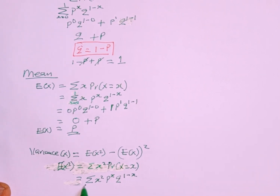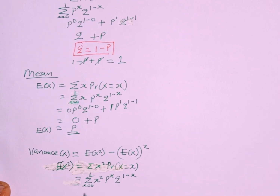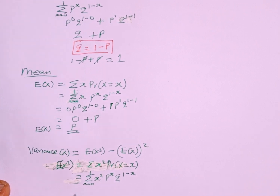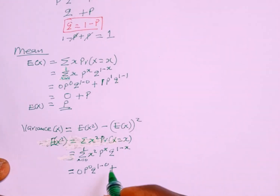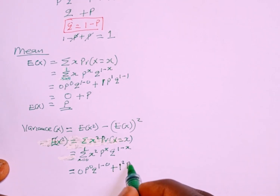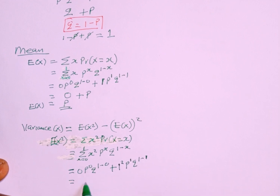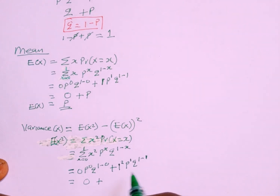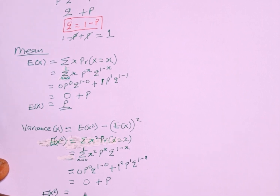At x equals 0: 0² times p^0 times q^(1−0). Since 0 squared is 0, the whole term is 0. At x equals 1: 1² times p^1 times q^(1−1). That is 1 times p times q^0. Since q^0 equals 1, this simplifies to p. Therefore, E[X²] equals 0 plus p, which is p.